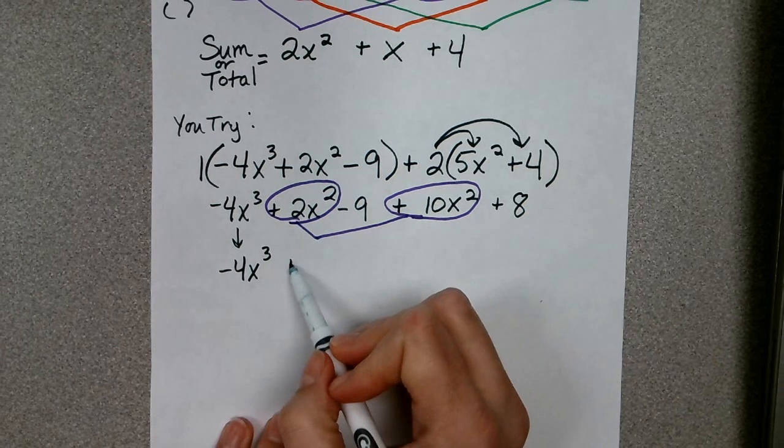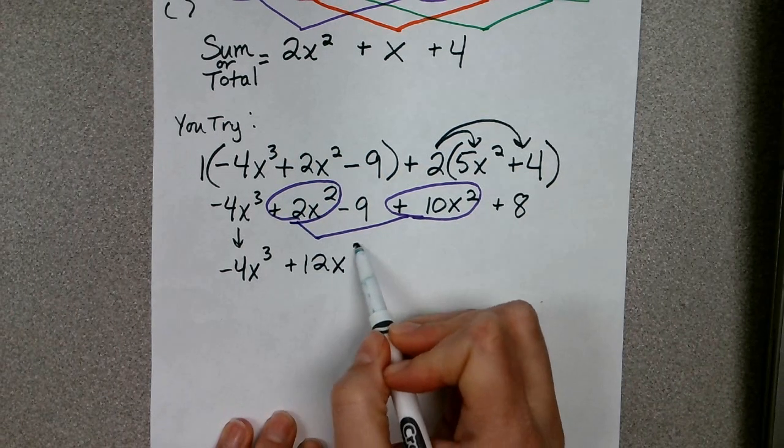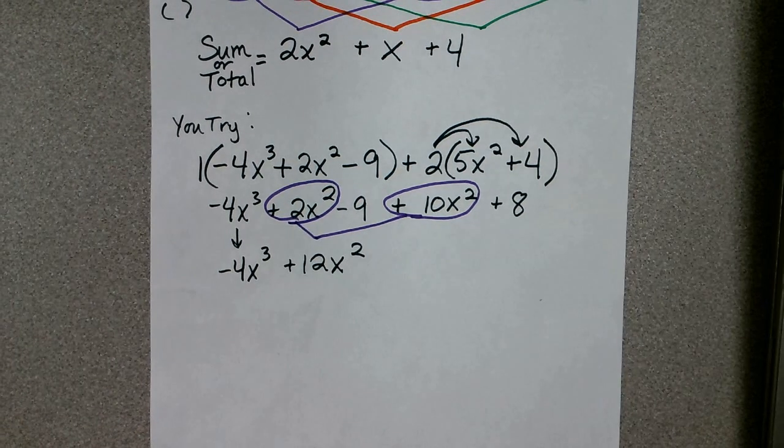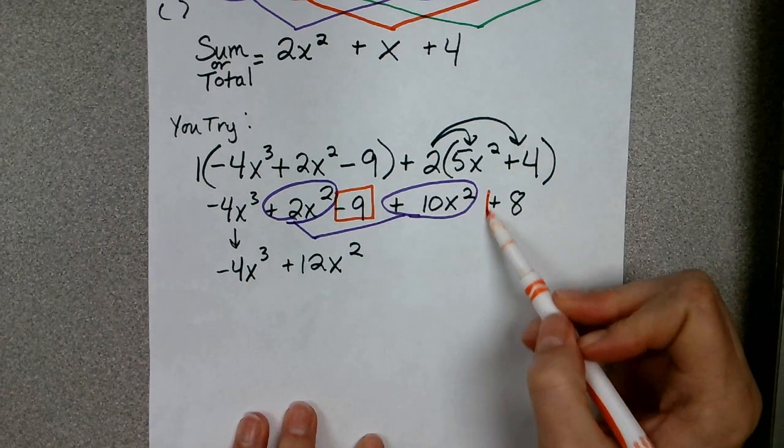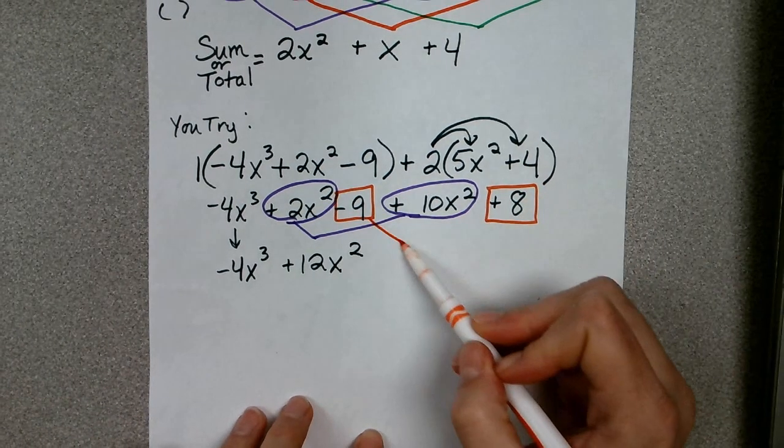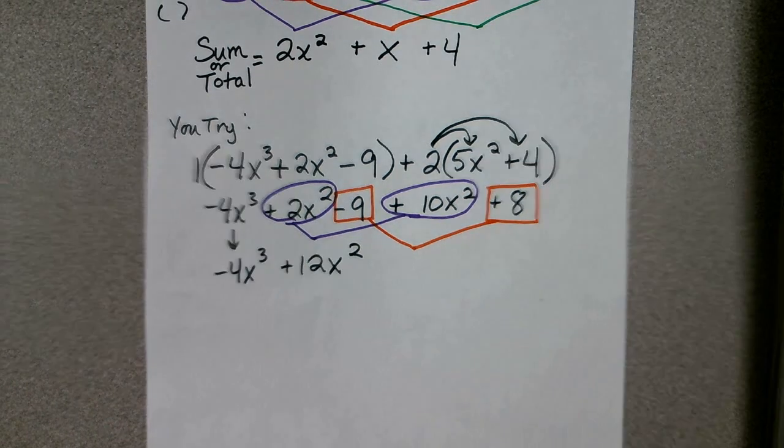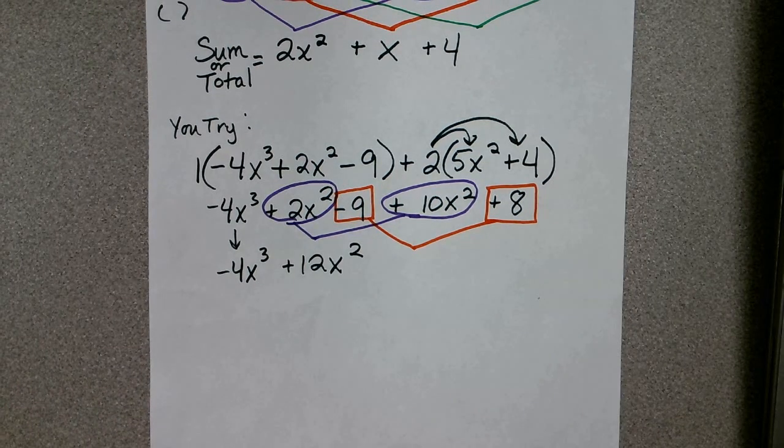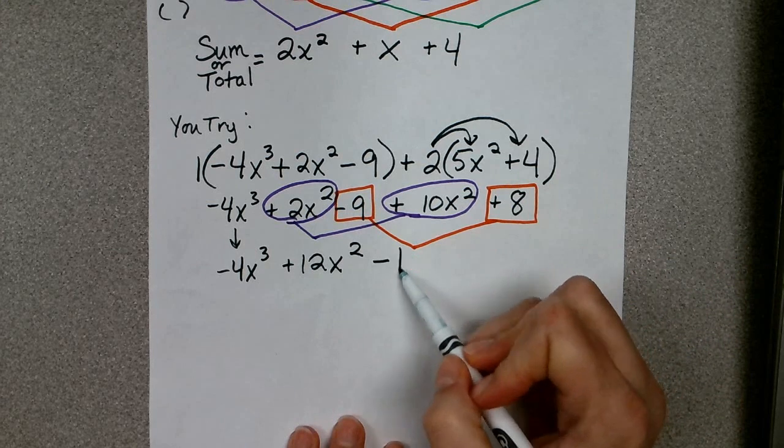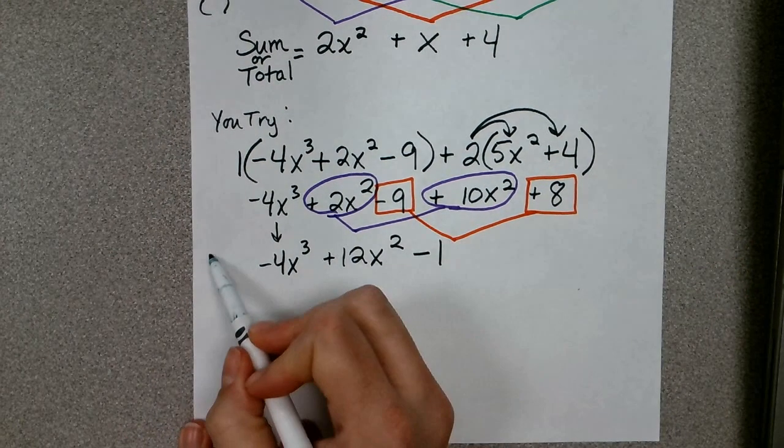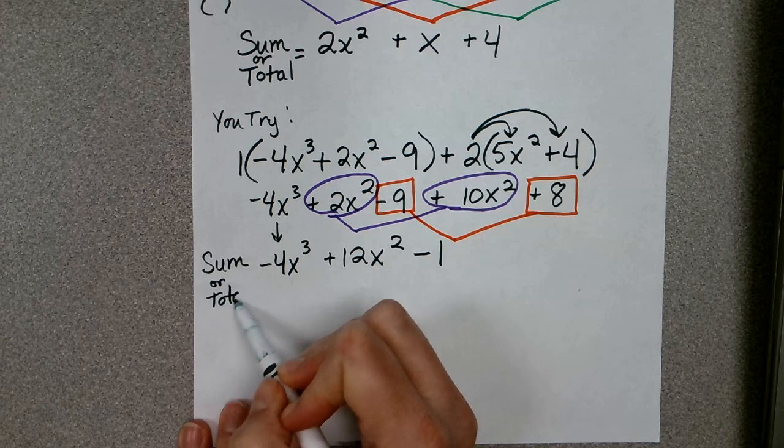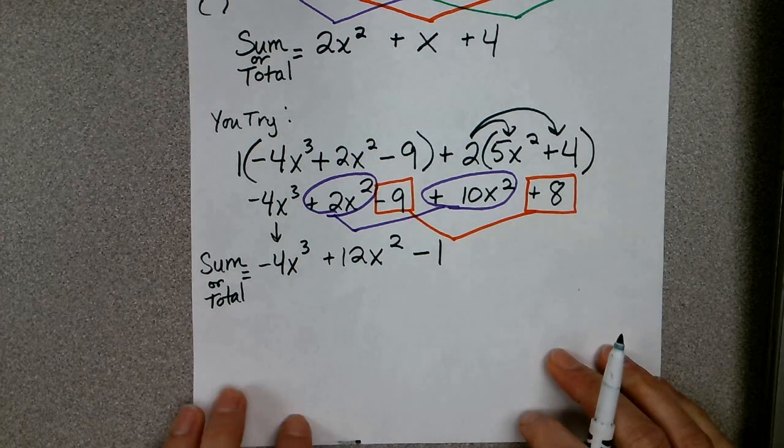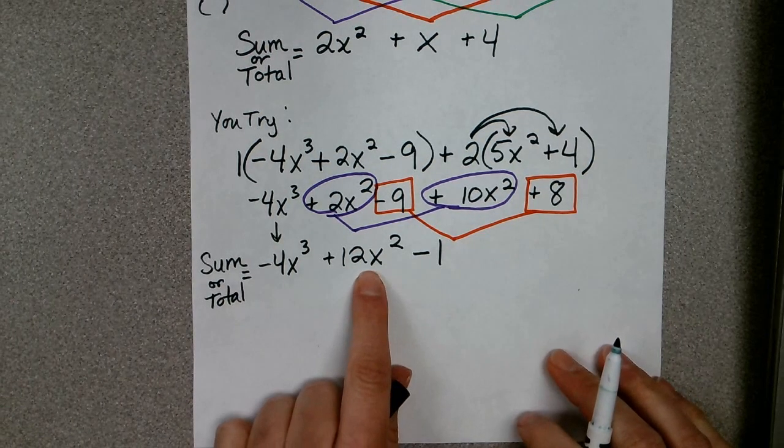Then when I look at my constants here, I have a negative 9 and a positive 8. So when I combine those, I'm going to have a negative 1. And so again, my final answer, known as my sum or my total of the two polynomials at the top, is equal to this polynomial here.